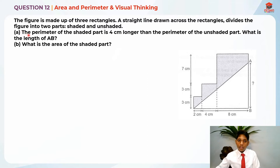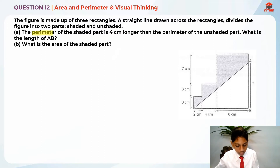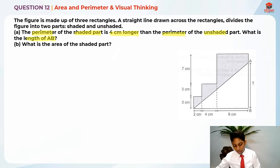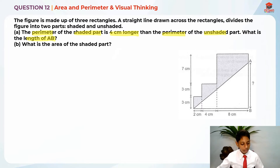Part A: the perimeter of the shaded part is 4 cm longer than the perimeter of the unshaded part. What is the length of AB? Let's look at the perimeter of the shaded part first.